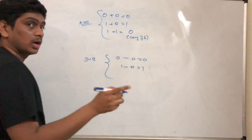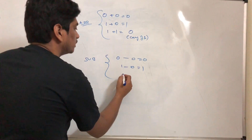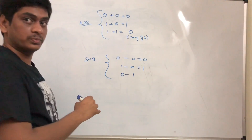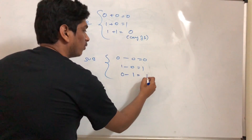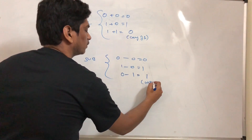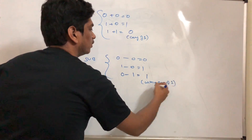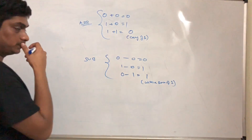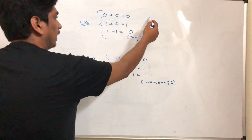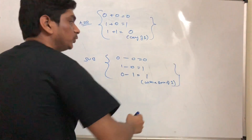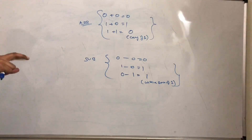However, 0 minus 1 is 1 with a borrow of 1. I don't need to prove this to you, but I will give you the background of how this works in binary.